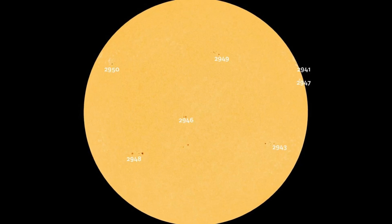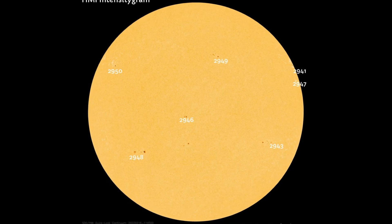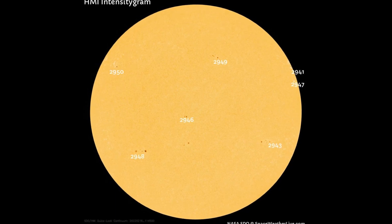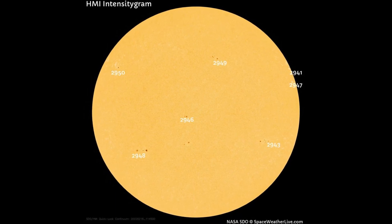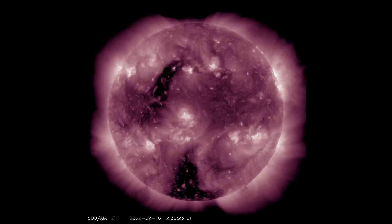There are seven sunspot regions on the Earth-facing side of the Sun. Also, a view of the coronal holes on the Earth-facing side of the Sun today, seen here on the SDO-211 filter.